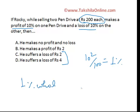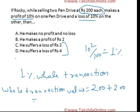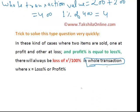The loss percentage is 10² by 100 equal to 1%. This 1% is calculated on the whole transaction. The whole transaction value is 200 plus 200 equal to rupees 400. So 1% of 400 equals rupees 4. The answer is option D — he suffers a loss of rupees 4. The key point here is that total loss is calculated on the whole transaction, not a single transaction.